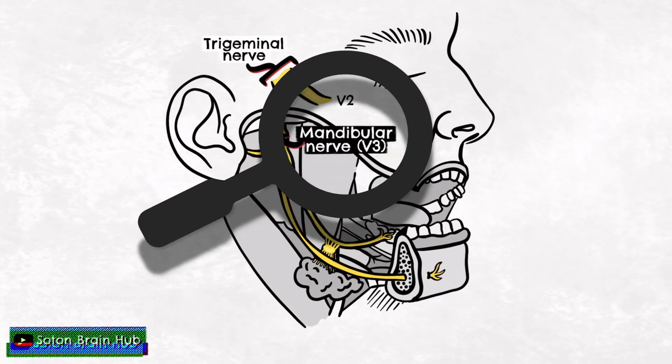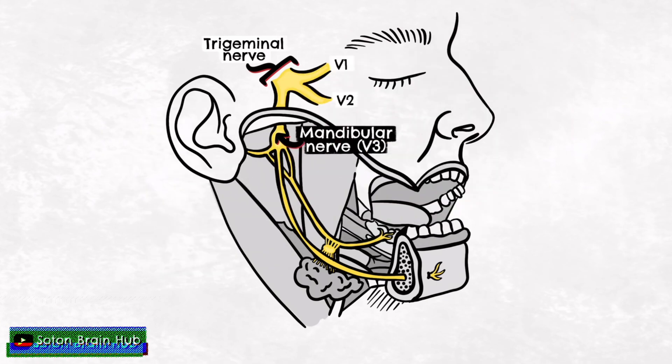The mandibular nerve is particularly important as it has both sensory and motor function. The mandibular nerve also carries parasympathetic fibres; however, it is very important to remember that these parasympathetic fibres don't belong to the mandibular or trigeminal nerve — rather they hitch a ride in some of their branches.